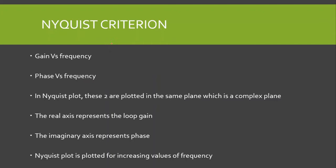The Nyquist curve or Nyquist plot is actually a combination of two curves: the gain versus frequency and the phase versus frequency — which are the Bode plots. So the Nyquist plot is a combination of these two types of plots, and they are plotted in the same plane, which is a complex plane. That plane is called the Nyquist plane.